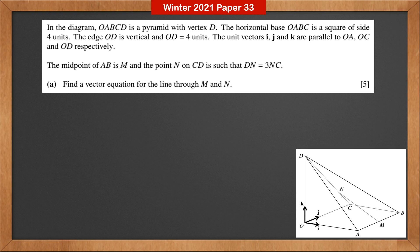The horizontal base OABC is a square of side 4 units. The edge OD is vertical and OD is 4 units. The unit vectors I, J, and K are parallel to OA, OC, and OD respectively. The midpoint of AB is M,